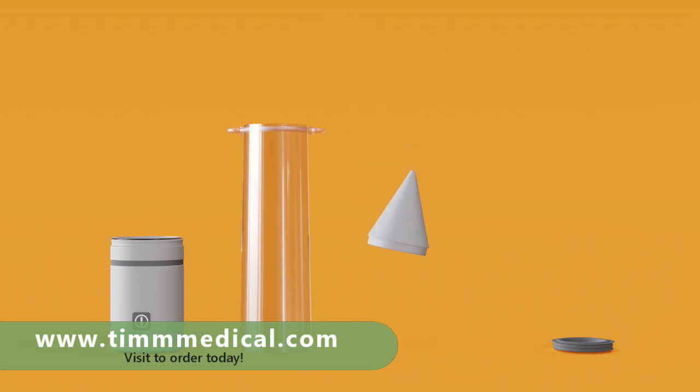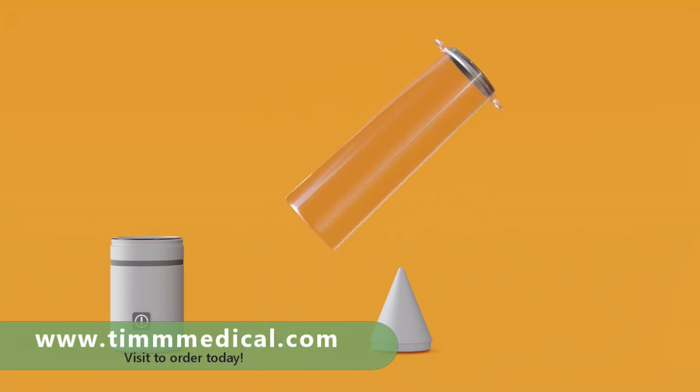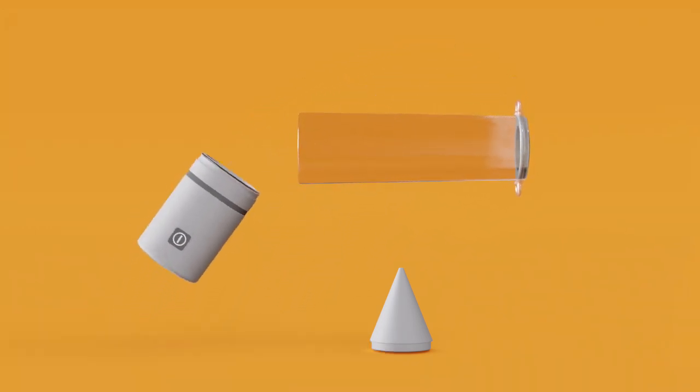Remove the cone. Insert the adapter bushing into the end of the tube. Place the pump head on the other end of the tube.